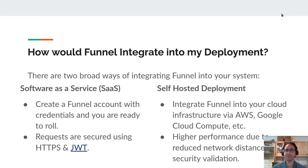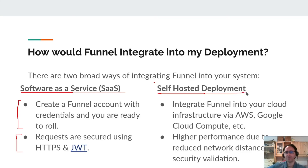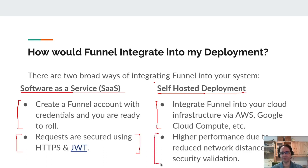How would Funnel integrate into your system deployment? There are two methods. The first is software-as-a-service: Funnel Labs hosts your service, you get credentials to log in, obtain a JWT token for your systems to access Funnel, and you're good to go. The second option is self-hosted deployment, where Funnel lives in your own system under a license, integrating into your cloud infrastructure — whether AWS, Google Cloud Compute, or otherwise. With self-hosting, certain components like JWT authorization can be disabled, squeezing out higher performance for fewer resources.